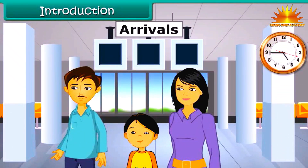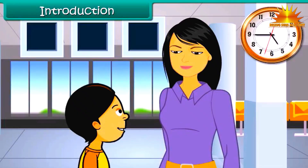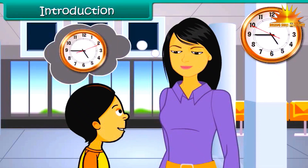Rita's family is eagerly waiting for her uncle to arrive from the USA. He is expected at 5 o'clock in the evening. Rita is growing restless and keeps asking her mother the time every two minutes. Her mother sees an opportunity to teach Rita to read time from the clock.